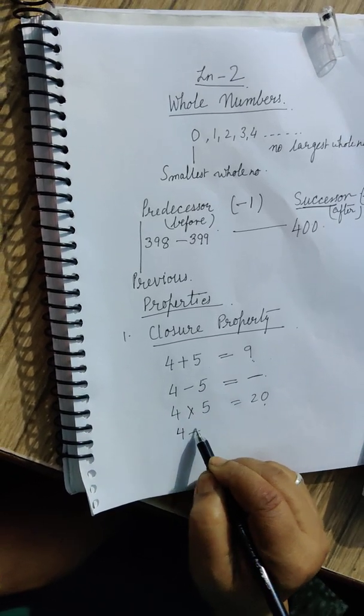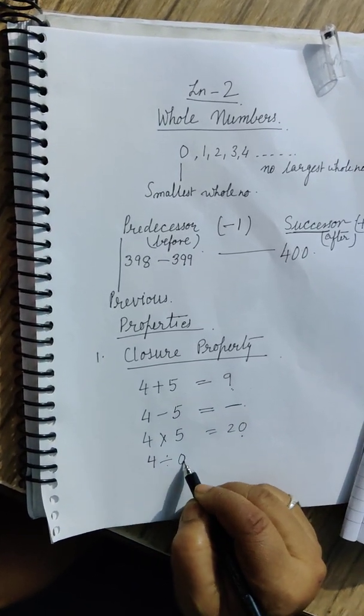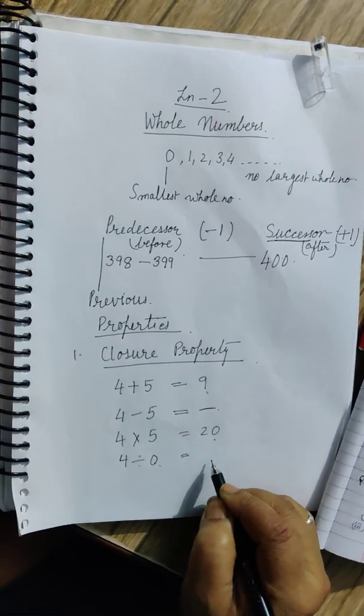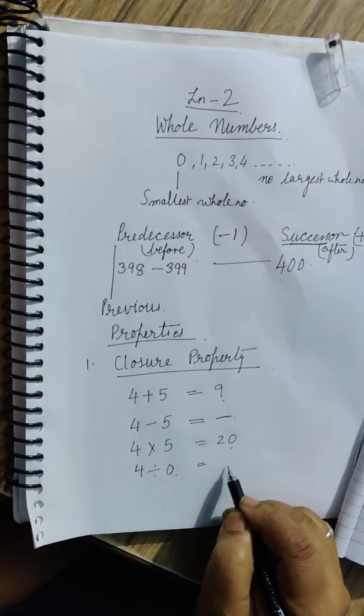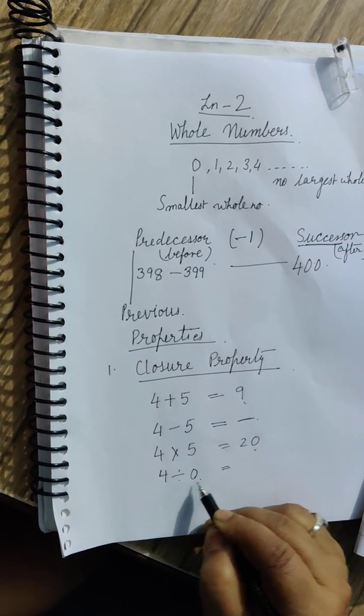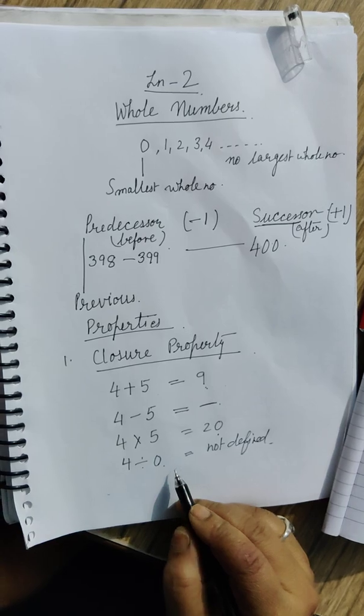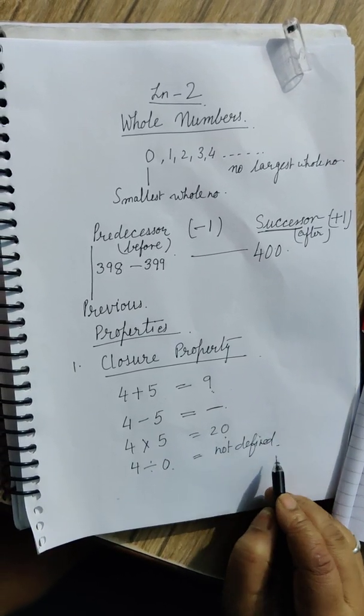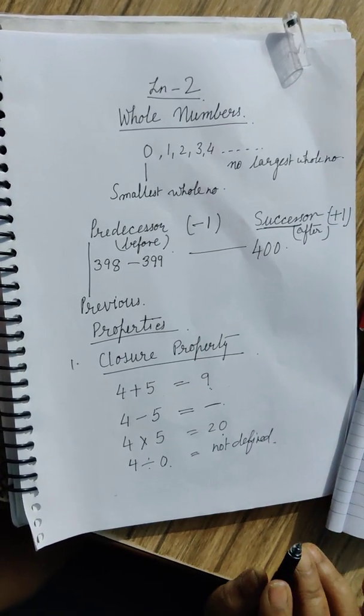But as far as division is concerned, it is not satisfied in all the cases. Sometimes 4 divided by 0. The answer is not defined, which is not a whole number.